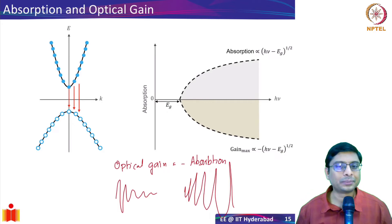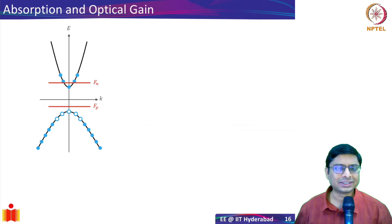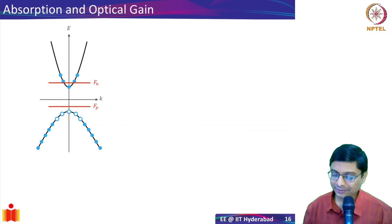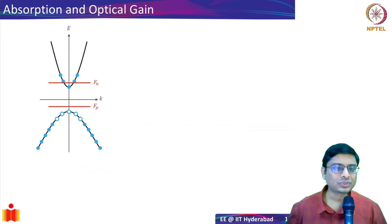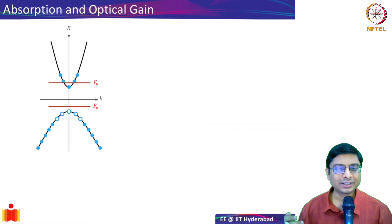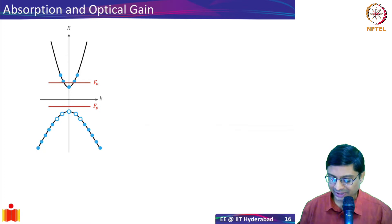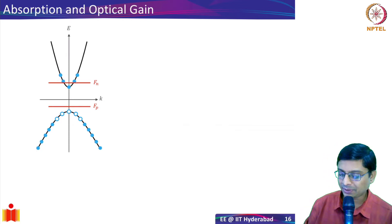In reality, having the conduction band completely filled and the valence band completely empty won't happen. In a realistic scenario you have the conduction band with some electrons and the valence band with some holes. If I take an intrinsic semiconductor and pump it — using a high-energy source, for example, pumping GaAs (band gap ~1.42 eV) with 2 eV photons — the electrons get excited to higher energy states.